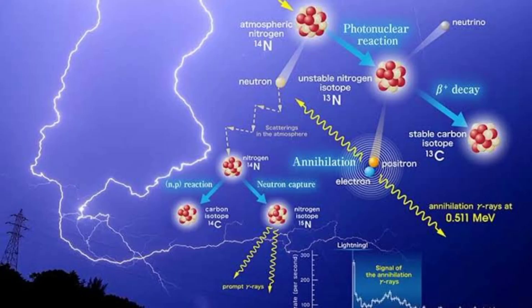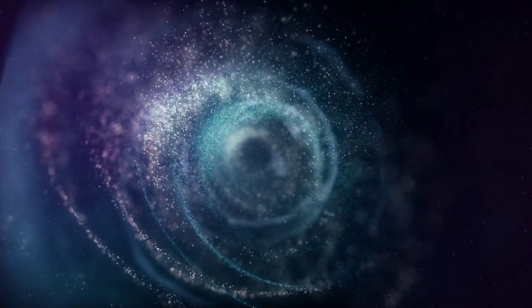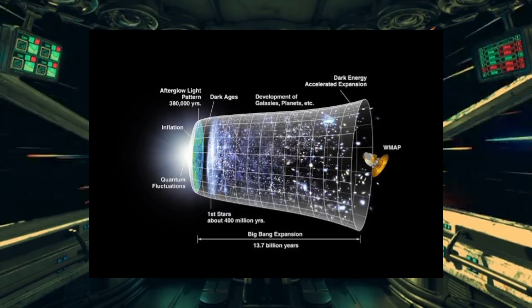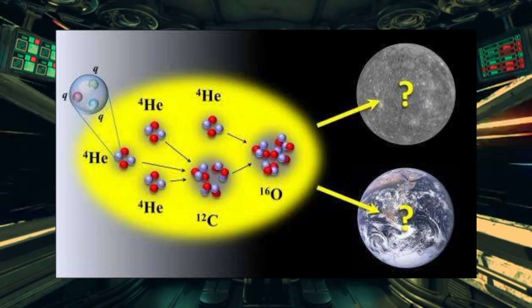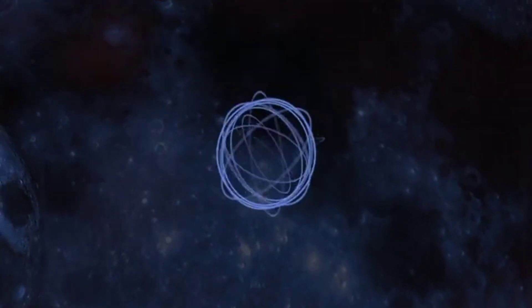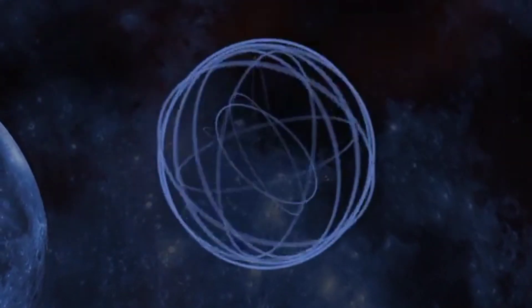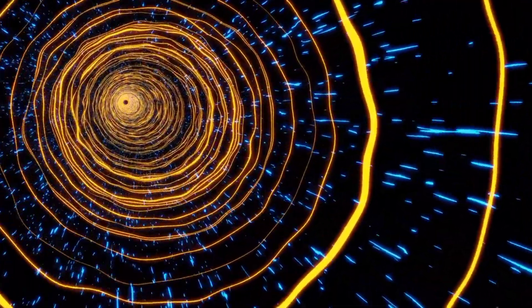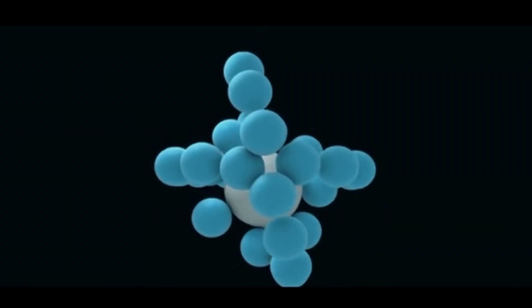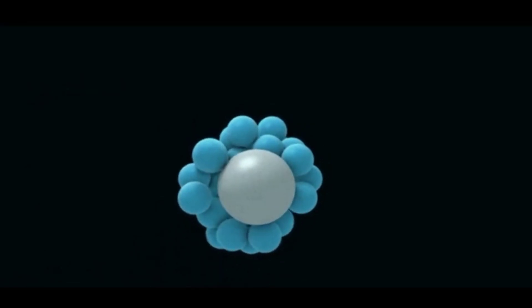One of the most elegant theories explaining the universe's perfection is the anthropic principle. The principle suggests that the universe's physical laws and parameters are precisely tuned to allow the emergence of intelligent life. Although the anthropic principle cannot be expressed in a single equation, it highlights the intricate interplay between the fundamental constants and the conditions necessary for life. If any of these constants were even slightly different, the universe would not have been suitable for the existence of intelligent beings capable of contemplating its perfection.